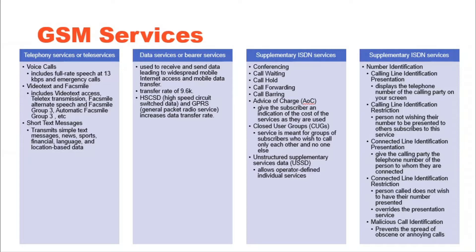Data Services or Bearer Services are used through a GSM phone to receive and send data, and are the essential building block leading to wide-spectrum mobile internet access and mobile data transfer. GSM currently has a data transfer rate of 9.6 kbps. New developments that will push data transfer rates for GSM users are high-speed circuit switched data and general packet radio services, which are now available.